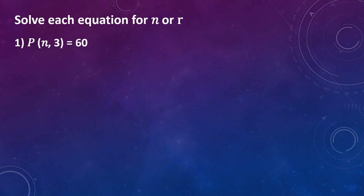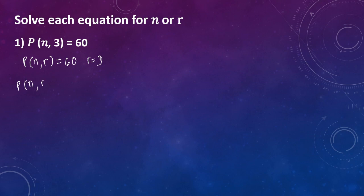Isulat muna natin yung ating mga given value dito. So yung P of n taken r at a time is equal to 60, at yung ating r naman is equal to 3. Gagamitin naman natin ngayon yung ating formula na P of n taken r at a time equals n factorial over quantity of n minus r factorial.